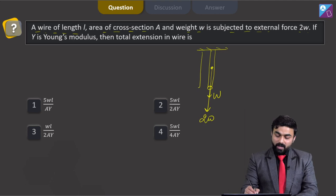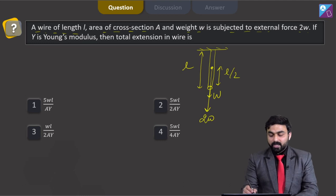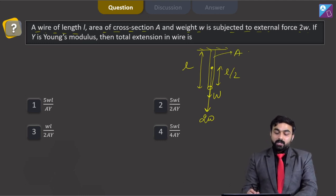Clear? The length of the wire is L. This is L by 2. And the area of the wire is A. So I need to calculate total extension.